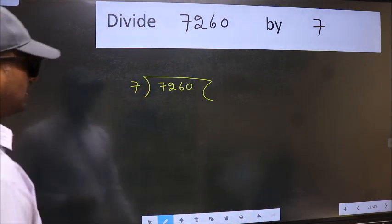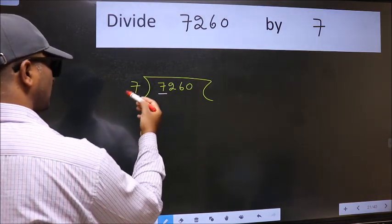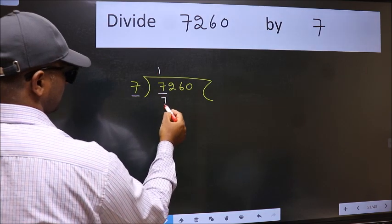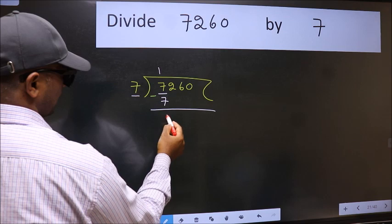Here we have 7 and here 7. When do we get 7 in the 7 table? 7 once 7. Now we subtract and get 0.